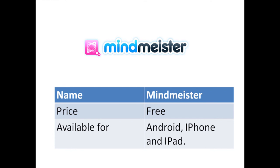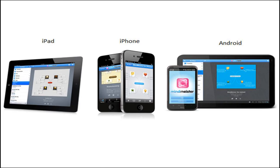MindMyster is a smartphone and tablet app that allows users to create, view and edit mind maps online and offline. The app also allows users to sync with their online account whenever connected. The app offers the ability to organize creations in folders, add images, icons, colors and styles, view and edit notes, links, tasks and attachments, and apply map themes.